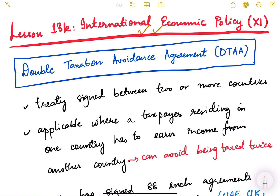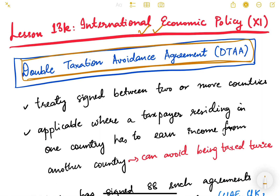One of them is the Double Taxation Avoidance Agreement, or DTAA. This is an important policy of the Indian government. The name itself suggests that this is a kind of agreement between two or more countries, and it is to avoid double taxation of people — meaning taxation in both countries.